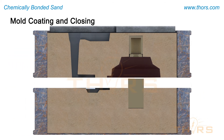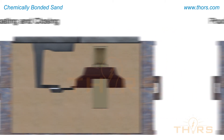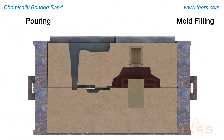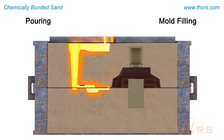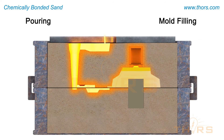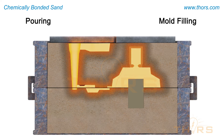Next, the molds are assembled and closed. Pouring, or mold filling, is where the molten metal is poured into the mold. Afterward, the metal is allowed to solidify and cool before separating it from the mold.